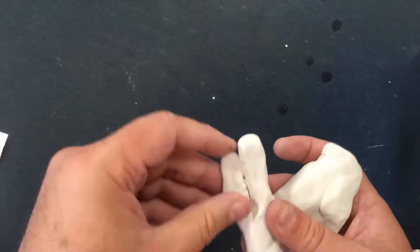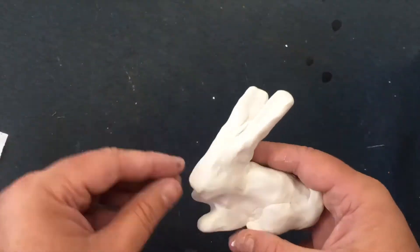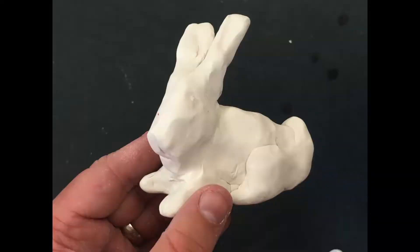Once all the big forms are connected and secure, I can use my fingers and tools to mold the forms until they look like the animal that I chose.